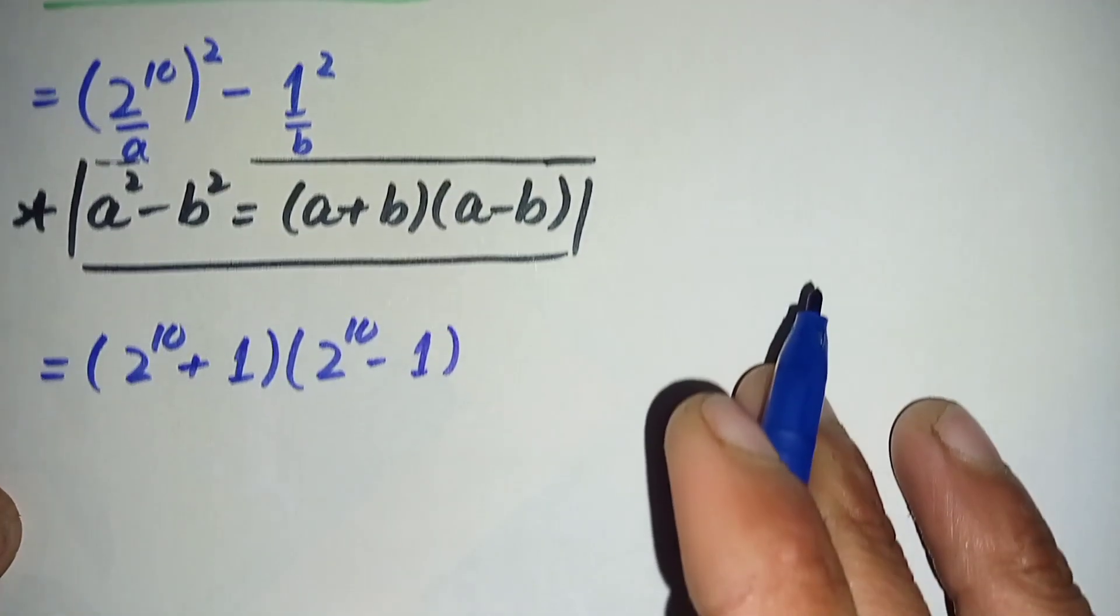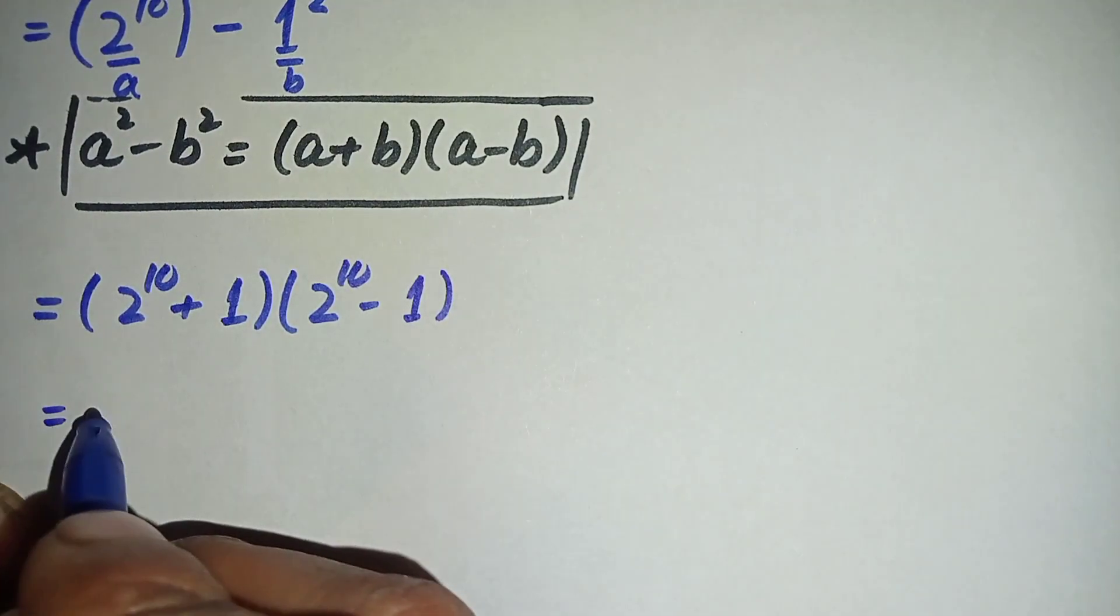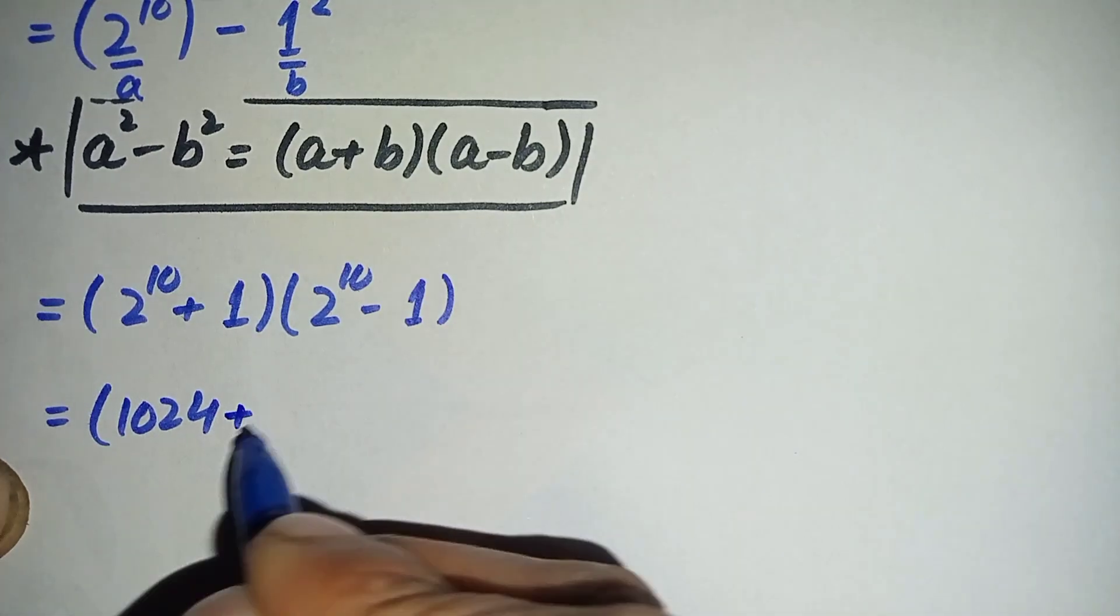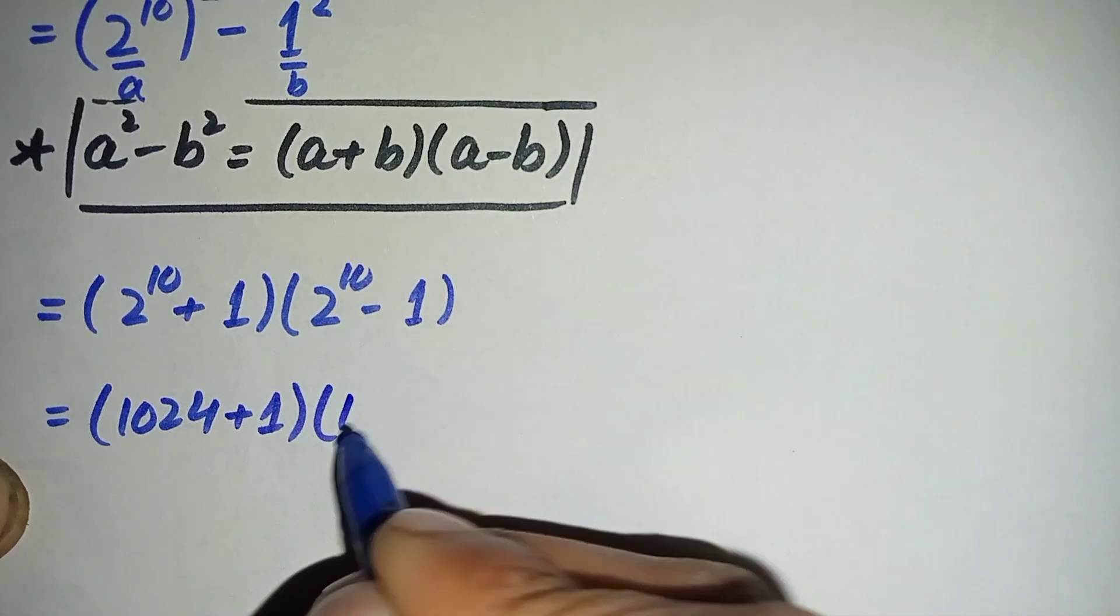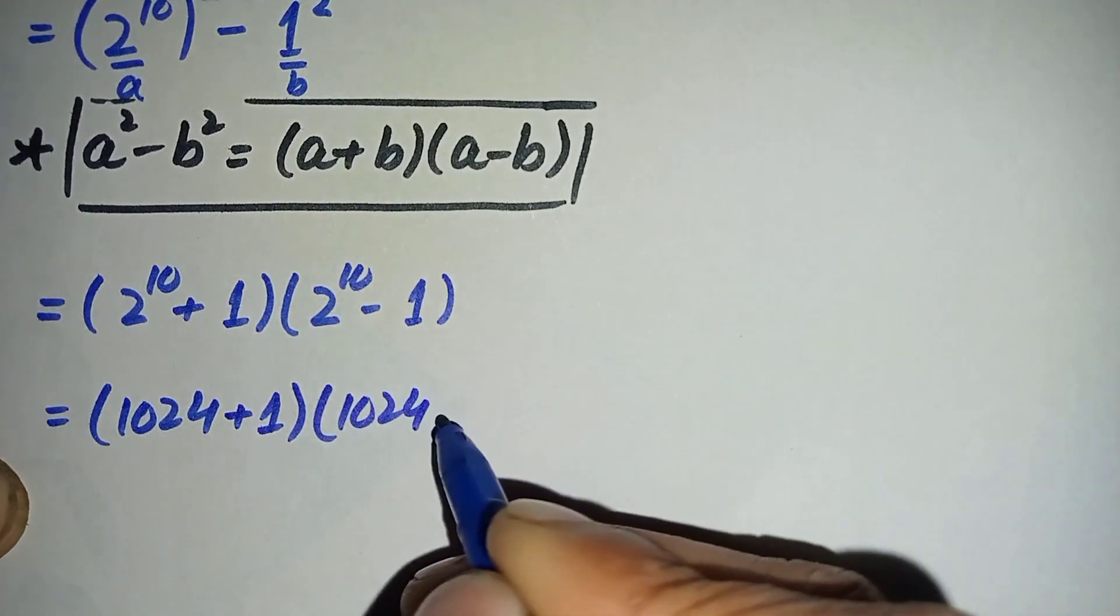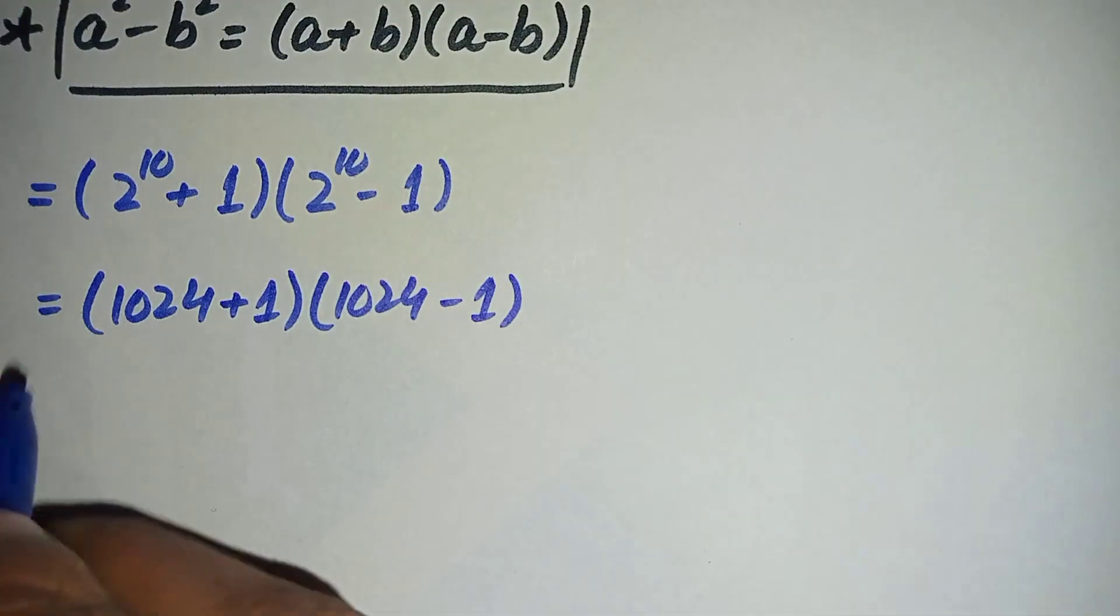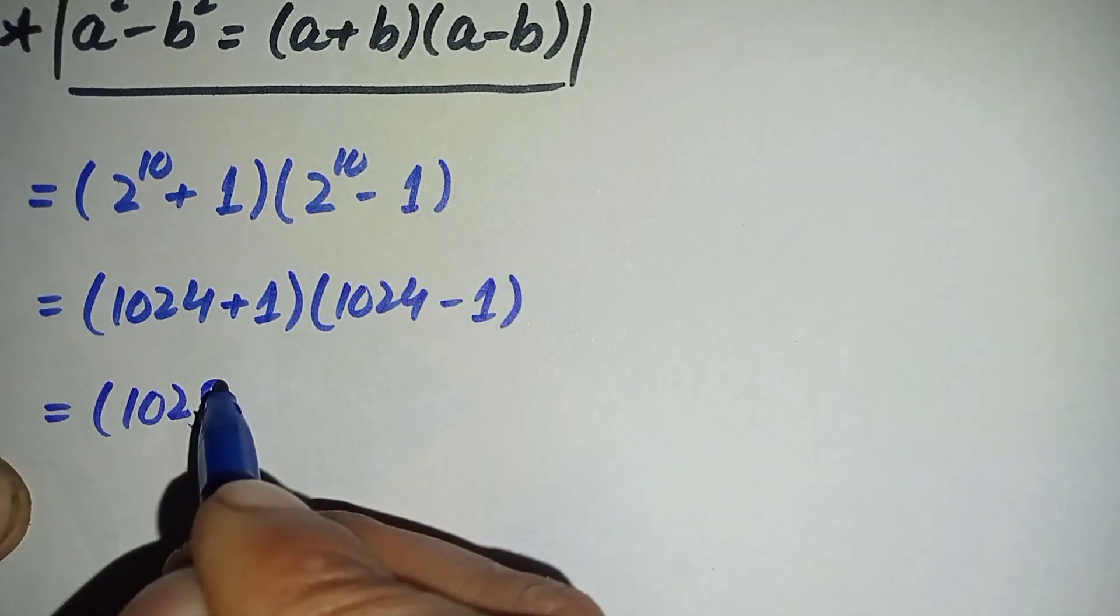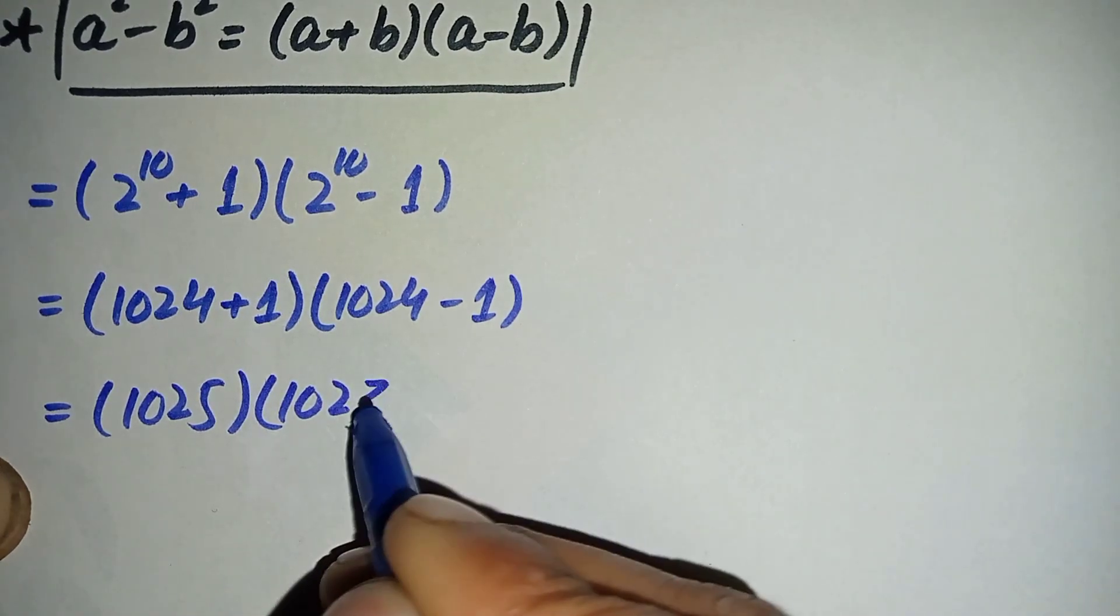Now my dears, here 2 raised to power 10 is a very famous number, that is 1024. So 1024 plus 1 and 1024 minus 1, so further it will become 1025 times 1023.